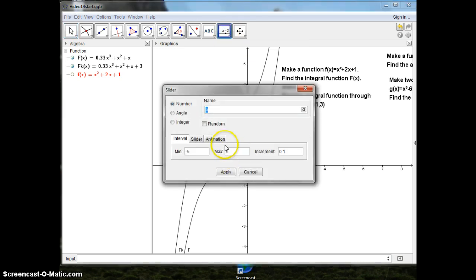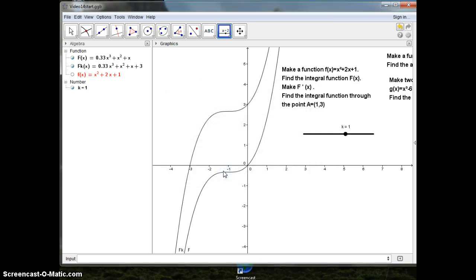I'll make a slider with a k. And the reason for that is, I want to solve my final problem here. That is, with a point A equal to 1.3. It's there. I want to find the integral function that goes through there.